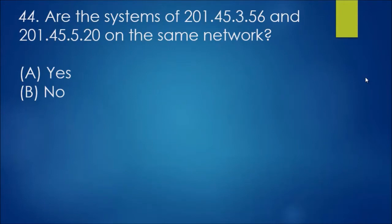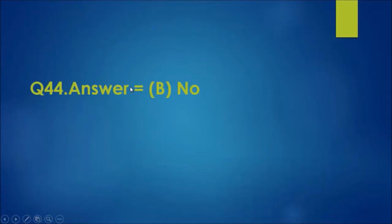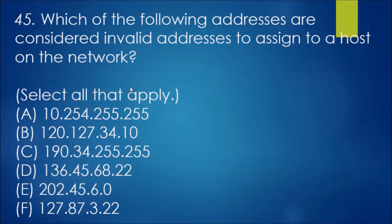Question 44: are the systems of 201.45.3.56 and 201.45.5.20 on the same network? The answer here is no, and I'll tell you why. We've got 201 here, so both are in 201, which is class C because it's past 192. That means the first three octets have to be exactly the same for them to be considered in that same network. The first two are correct as we can see, 201.45, but the last one, the second last one, three and five are different, which therefore makes them different.